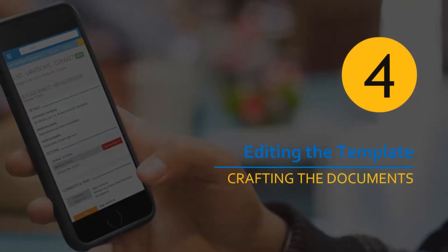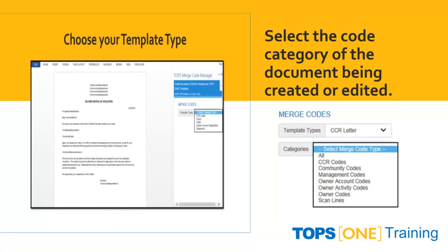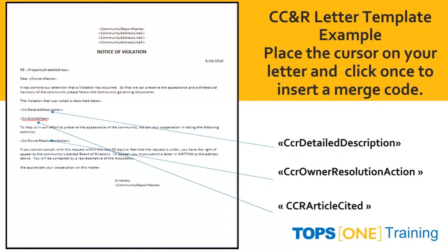Chapter 4: Editing the Template — Crafting the Documents That You'll Need. Once the template type has been selected, a category of available codes will appear below. You can select CCNR codes specifically, community codes, management, owner codes, and others. When creating your template library, using the CCNR letter as an example, place your cursor in the body of the letter you're creating, then click once in the Merge Code Manager to insert the merge code of your choice.